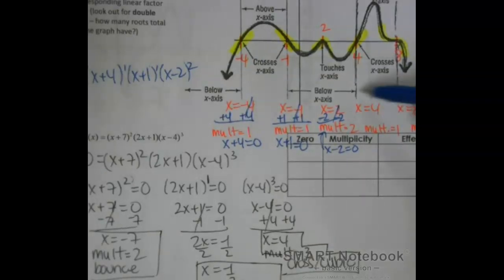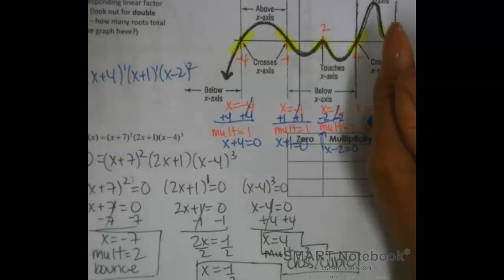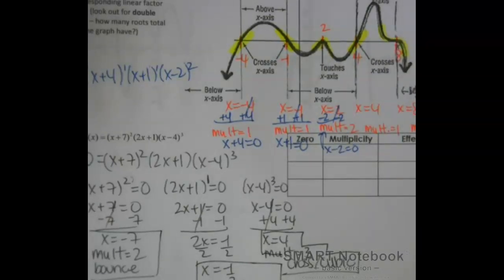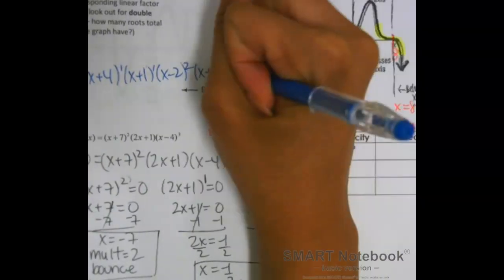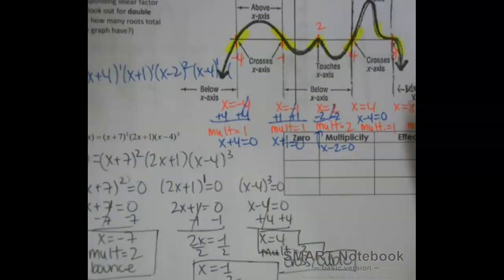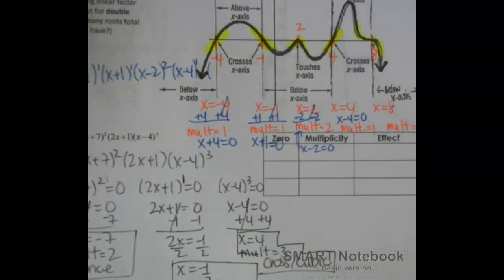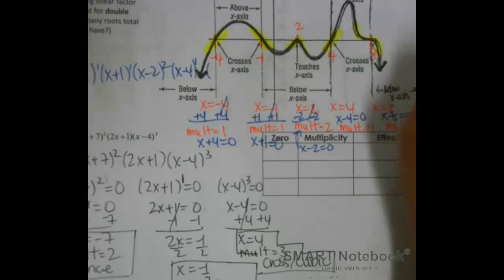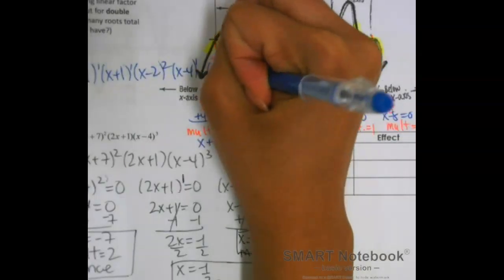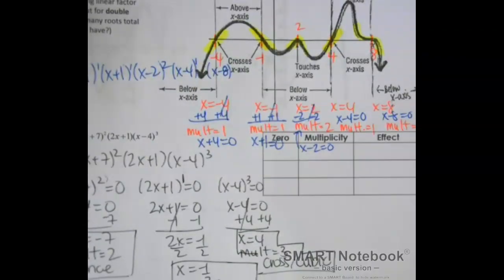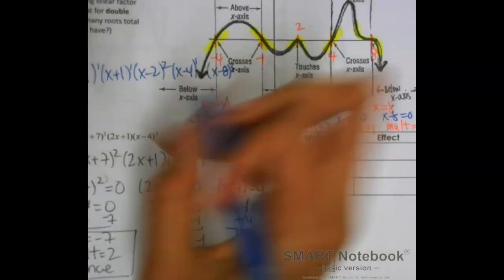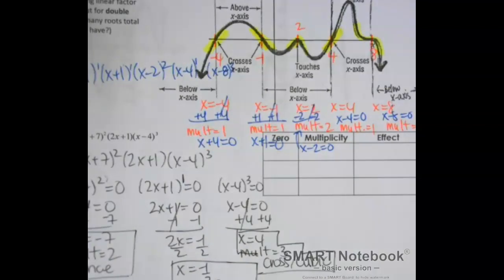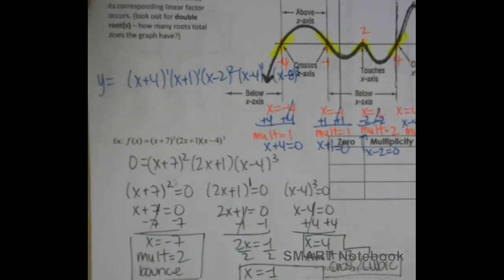For x equals 4, we get x minus 4 equals zero with a multiplicity of 1. For x equals 8, we get x minus 8 equals zero, so we write x minus 8 with an exponent of 3 for its multiplicity. So this equation — even though it's getting complex — is what I should get for the general equation for this graph.